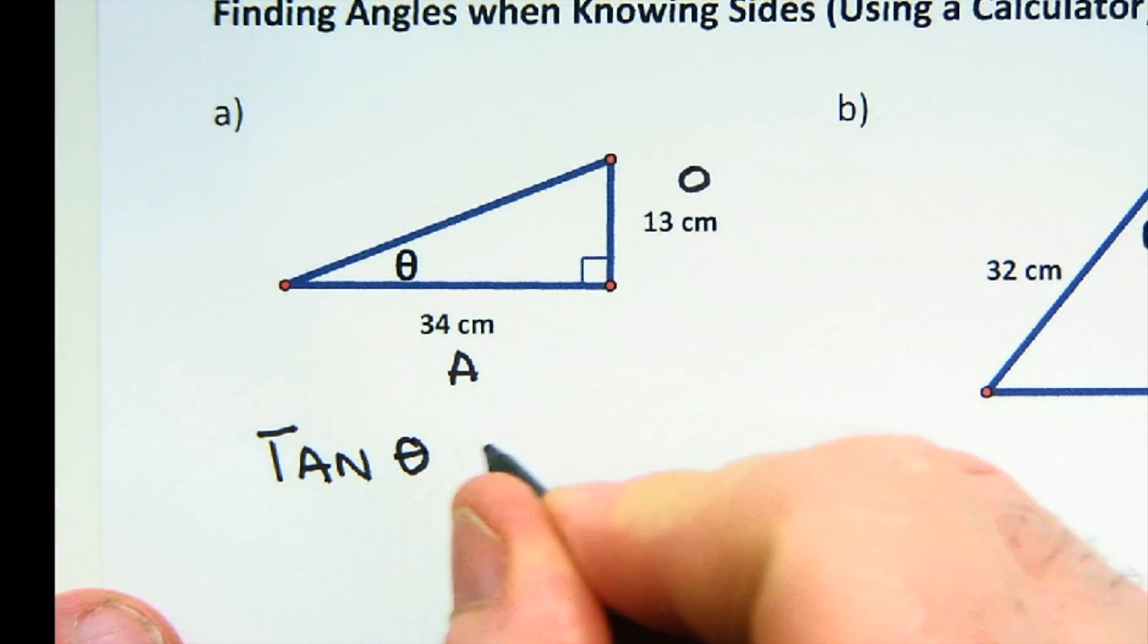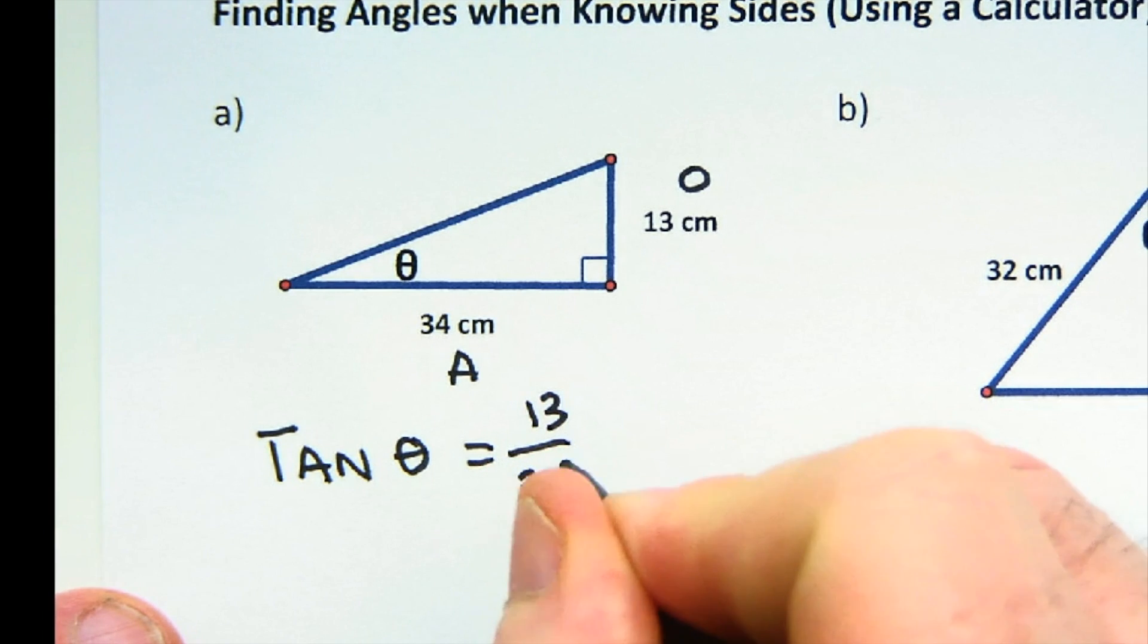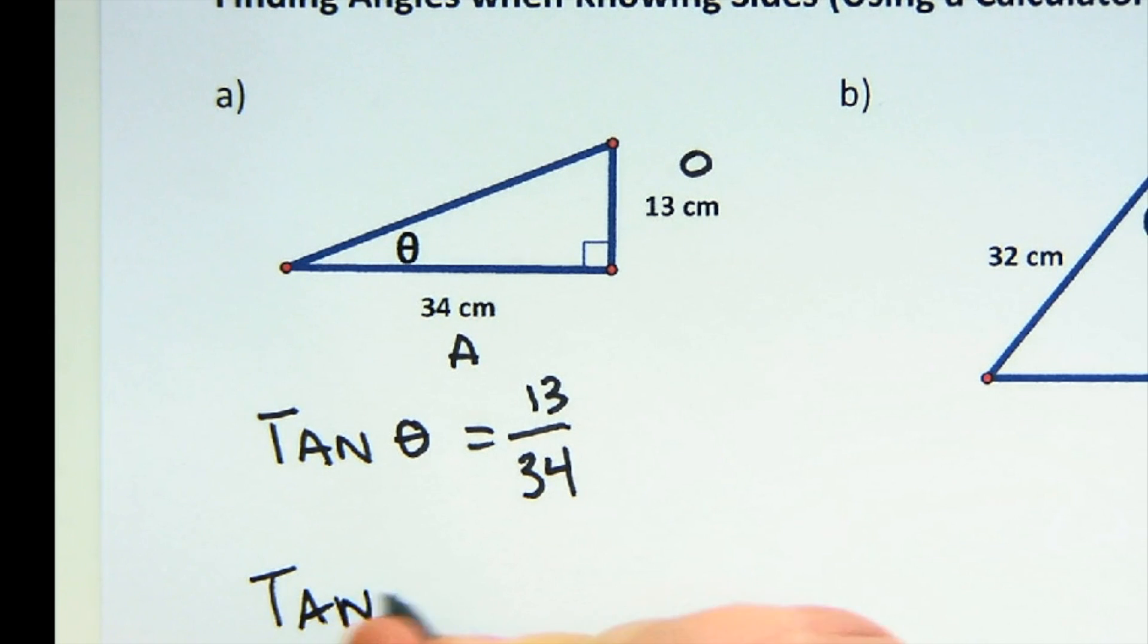So what we do is we say well if this is our reference angle this would be the opposite and adjacent. That's called the tangent ratio. So the tangent ratio of some angle will be 13 to 34. Now the idea is that there is only one triangle angle that would match that. Let's just do it as a decimal here for a second just to maybe warm you up to this idea. So 13 divided by 34 comes out to 0.382 or something like that.